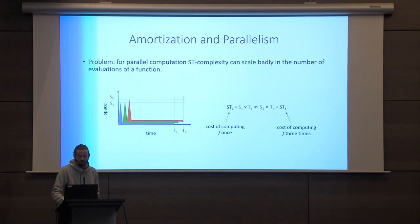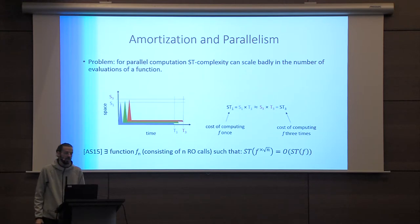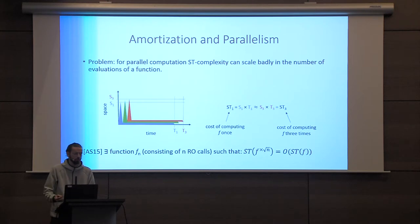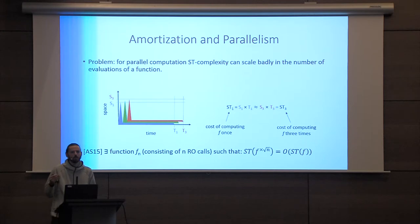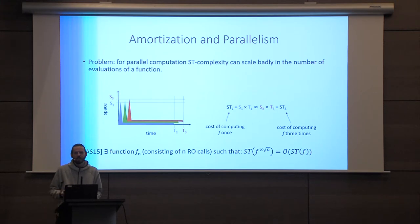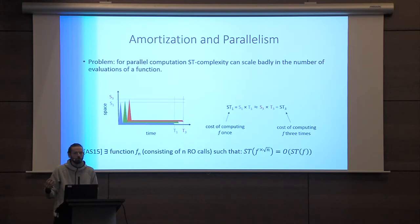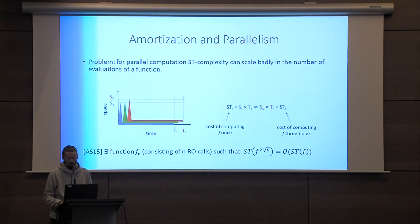This can be quite extreme. In AS15, there was an example of a function — a mode of operation on n calls to a compression function — where the space-time complexity of computing it √n times was really not much more than computing it once. So space-time complexity is good for understanding one-off computation, but it's not a very good notion when you want amortized complexity for parallel computation.